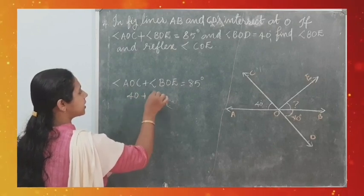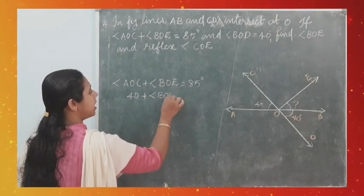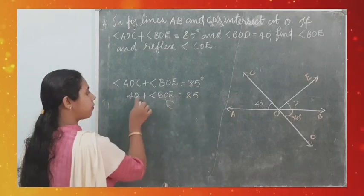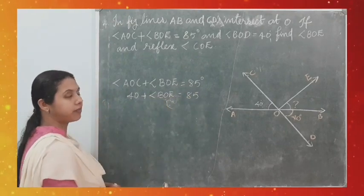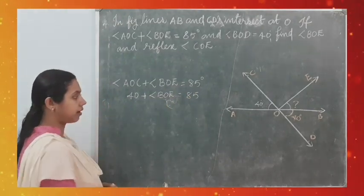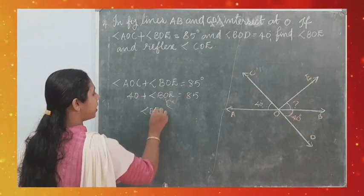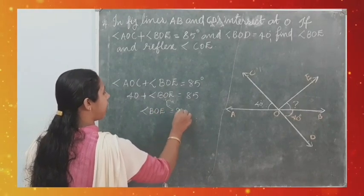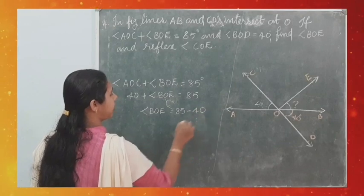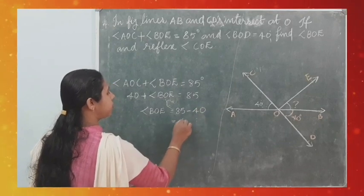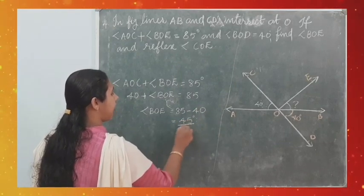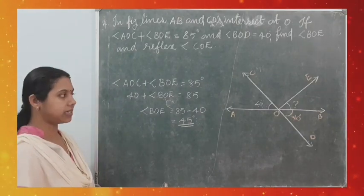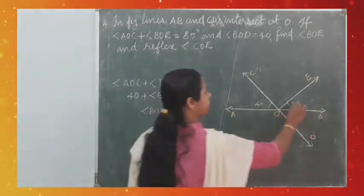Substituting into the given equation: 40° + angle BOE = 85°, so angle BOE = 85° − 40° = 45°. Therefore, angle BOE = 45°.